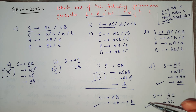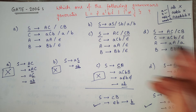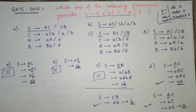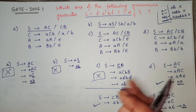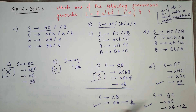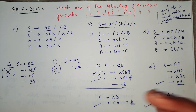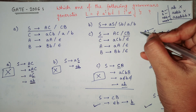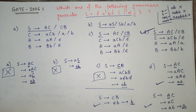So after analyzing all the options, D is the correct answer. This is one of the easiest ways to get to the answer — by testing productions quickly and eliminating options.